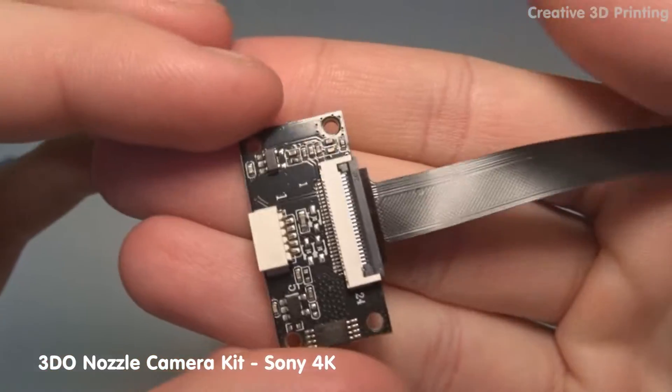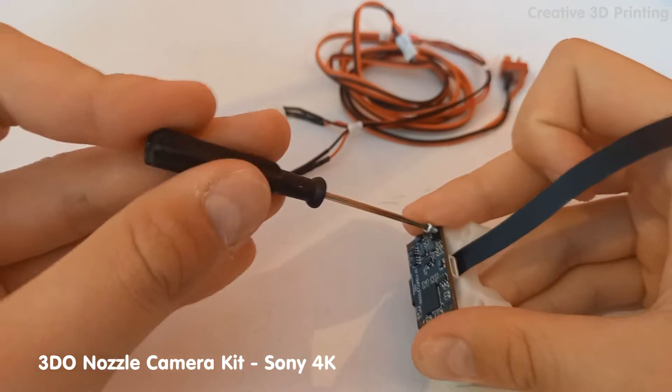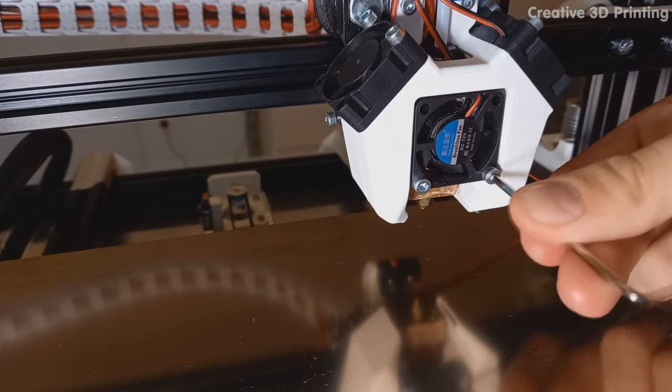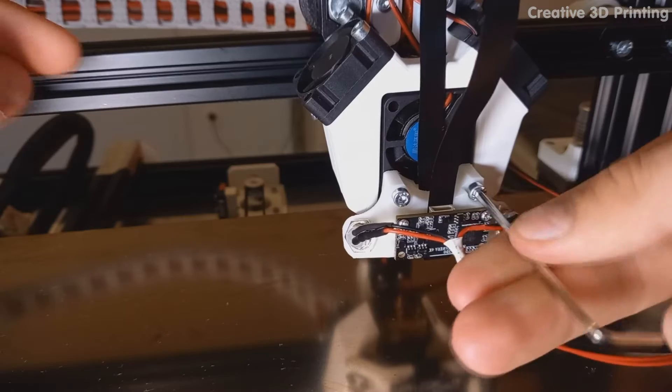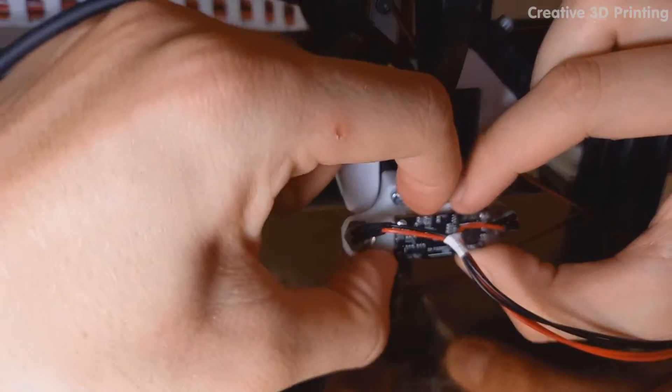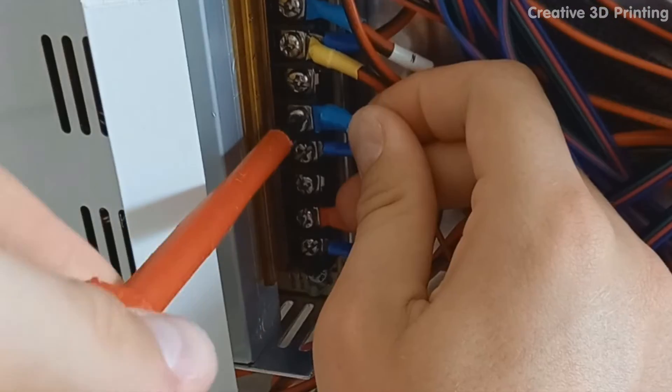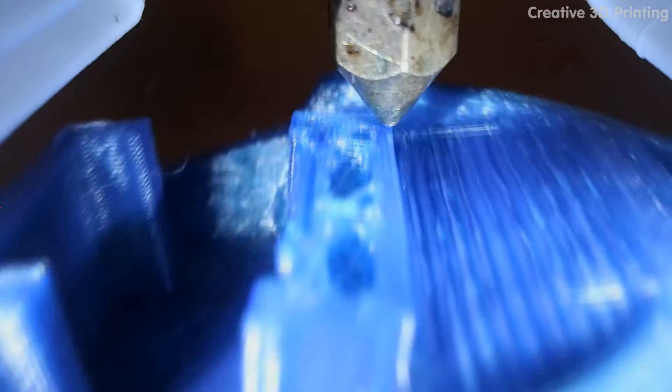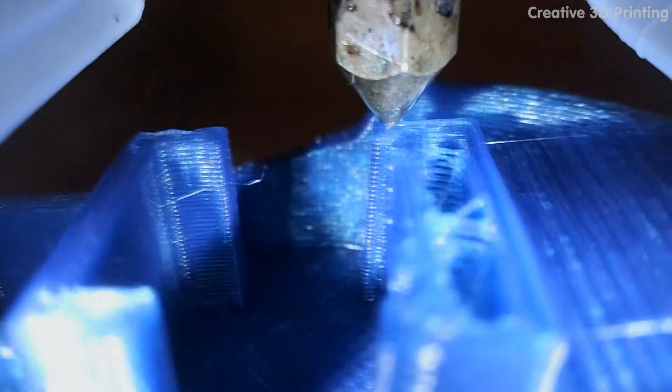I bought this camera module that is specially made to mount next to the warm nozzle. I made this holder for the camera module and two 12 volt LEDs because a camera needs a lot of light to make beautiful videos. Because the camera is mounted so close to the nozzle, I can take these cool videos with it.